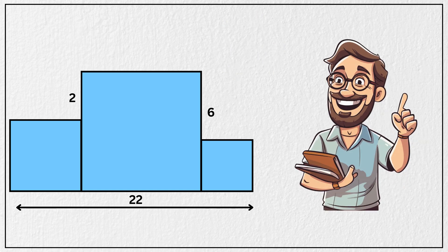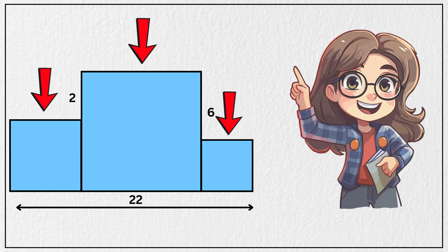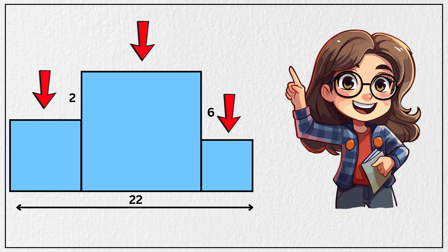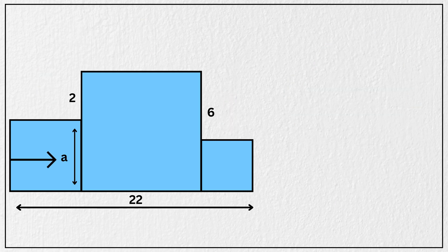Alright, let us solve it together. But before we begin, let's define the side lengths of the three squares. Let's call the side of this square as A, the side of this middle square as B, and the side of this third square as C.